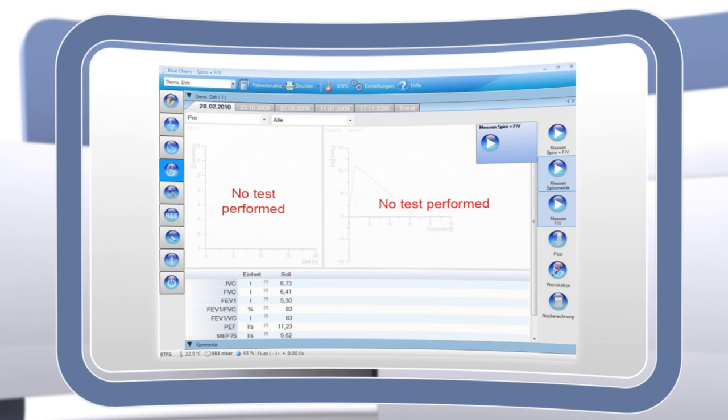The so-called flow volume curves appear later in the diagram area over here. The predefined parameter list shows the target value calculated by BlueCherry for the selected patients.